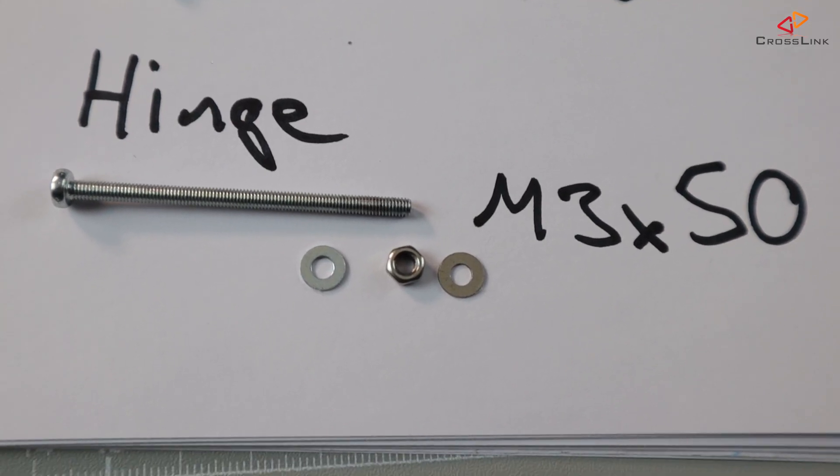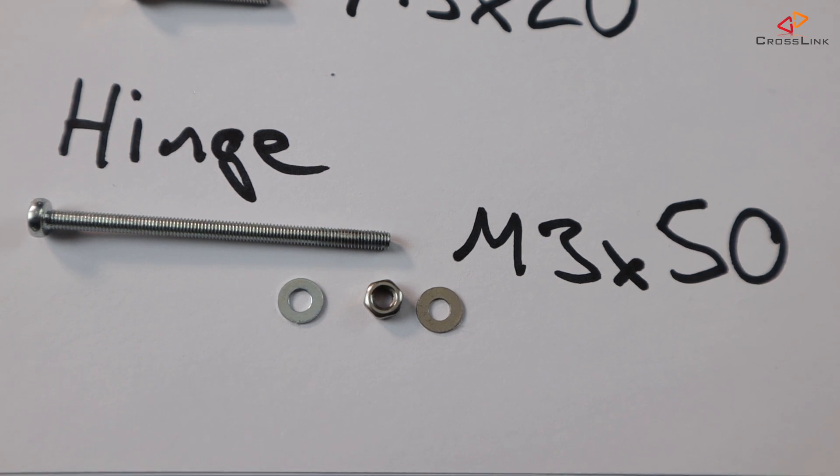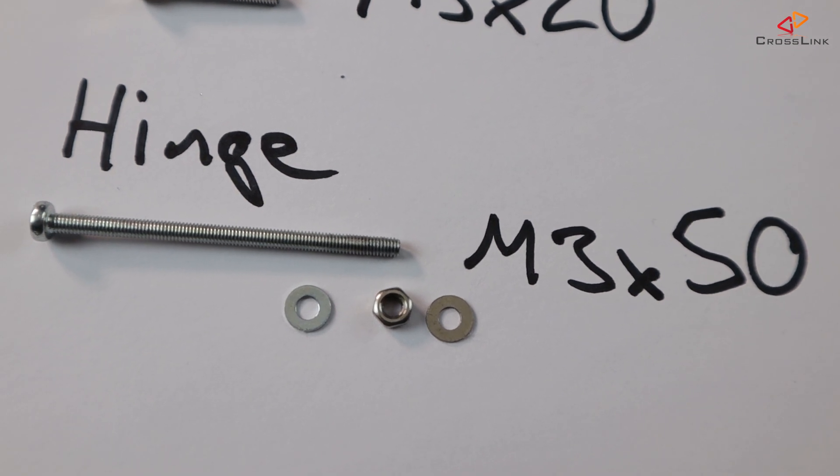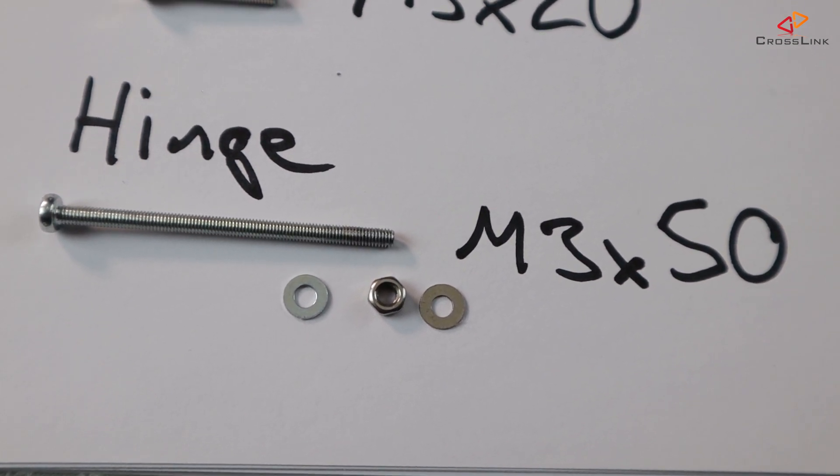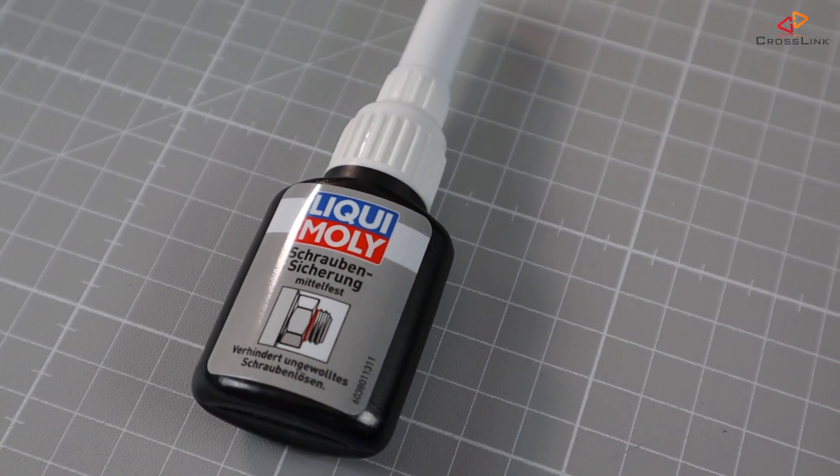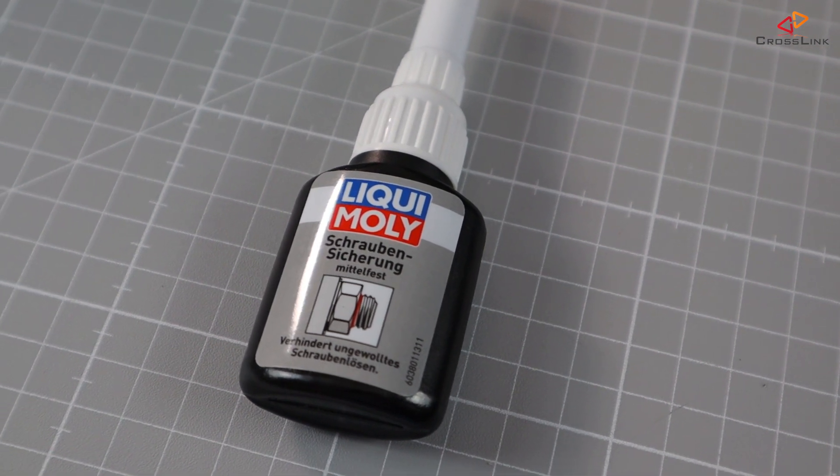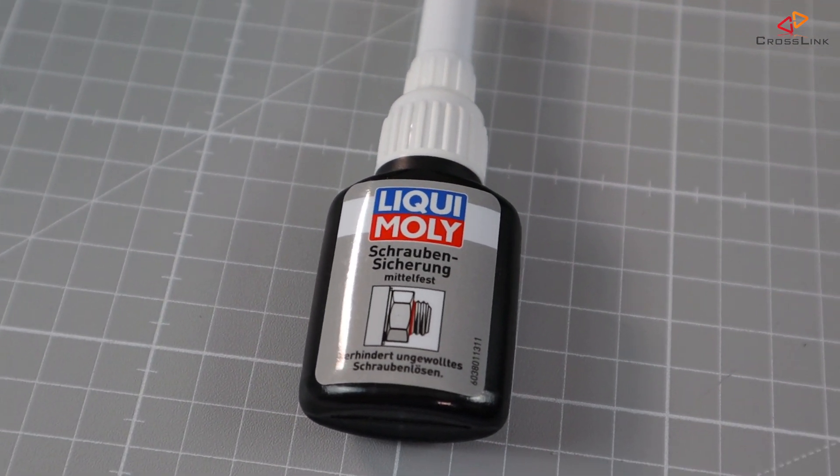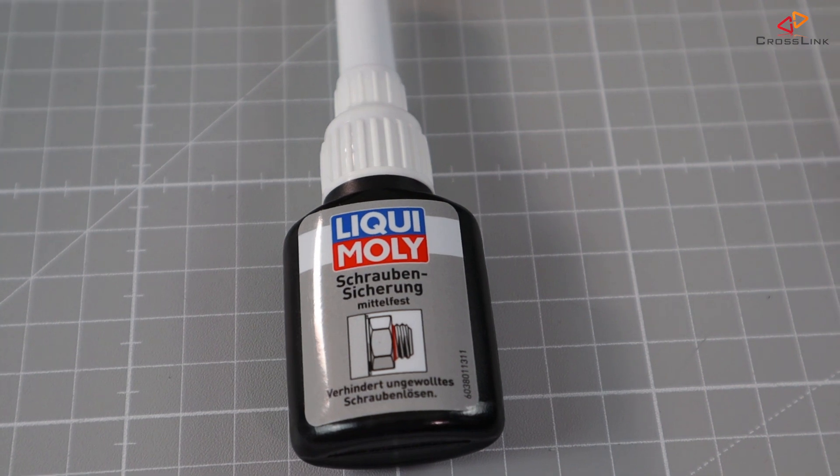Finally, we need a 50mm long M3x30mm screw, some washers and a nut for joining the fan hinge. Also get some Loctite to fix the fan hinge screw and the nut, otherwise it will loosen because of the constant vibrations of the printer.